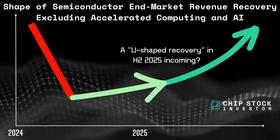We've been focusing on this U-shaped recovery quite a bit, expecting that the second half of 2025 will be coming out the other side for all end markets except accelerated compute and AI. Of course, there may be some headwinds due to tariffs and trade wars. But ultimately, chips have to get made because end markets need semiconductors. Those sales will have to get made at some point — if inventories are too low, chips will get sold.